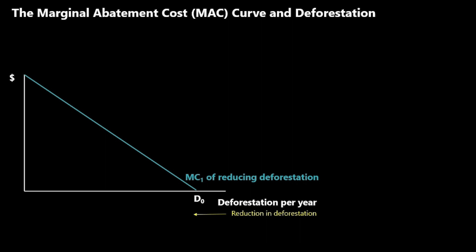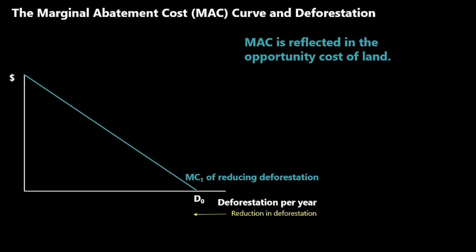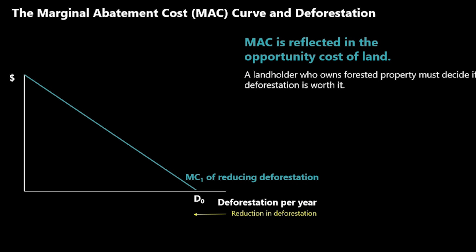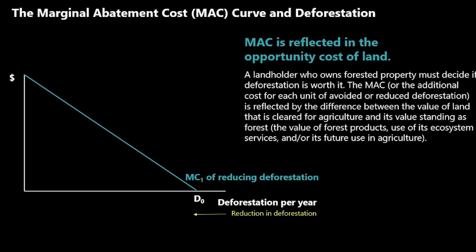So instead of abating or cleaning up pollution, we're reducing deforestation. Here, the marginal abatement cost is reflected in the opportunity cost of land. A landholder who owns forested property must decide if deforestation is worth it. The marginal abatement cost — the additional cost for each unit of avoided or reduced deforestation — is reflected by the difference between the value of land cleared for agriculture and its value standing as forest: the value of forest products, ecosystem services, and its future use in agriculture.